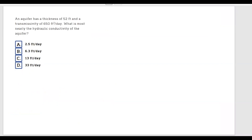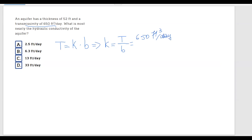Let's apply the formula: T equals the coefficient of permeability multiplied by b, the thickness of the aquifer. Rearranging, k equals T over b. Substituting: T is 650 ft²/day and b is 52 feet. Calculating: 650 divided by 52 gives us a permeability of 12.5.